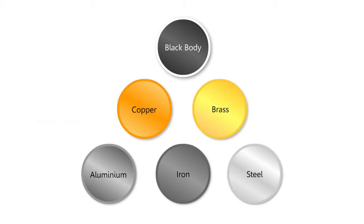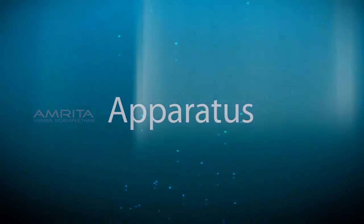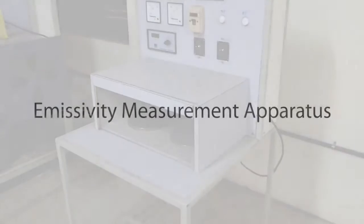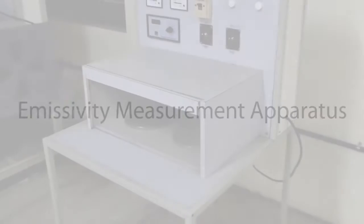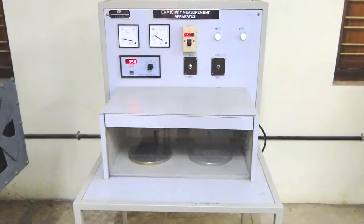Apparatus: emissivity measurement apparatus. The experimental setup consists of two circular aluminum plates identical in size and provided with heater coils at the bottom.